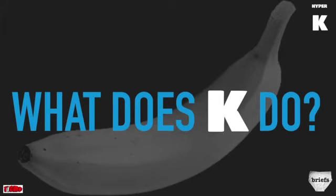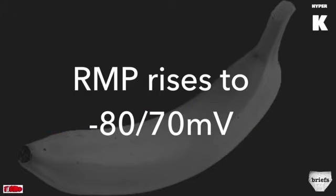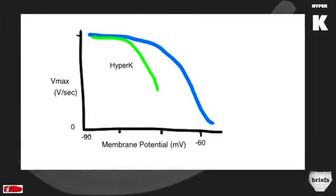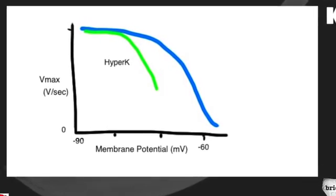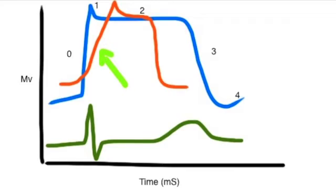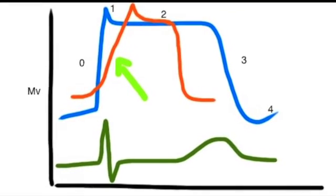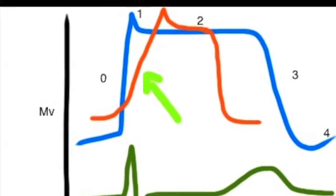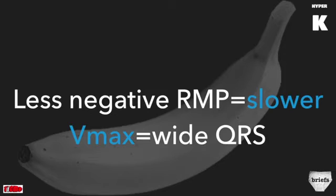Here's where potassium plays its role. In the setting of hyperkalemia, the resting membrane potential becomes more positive — so instead of being minus 90 millivolts, in hyperkalemia it might be minus 80, or when severe, minus 70 millivolts. This has the effect of reducing the Vmax. The Vmax is related to the number of sodium channels opening, and if the Vmax is low, depolarization will take longer, leading to widening of the QRS.